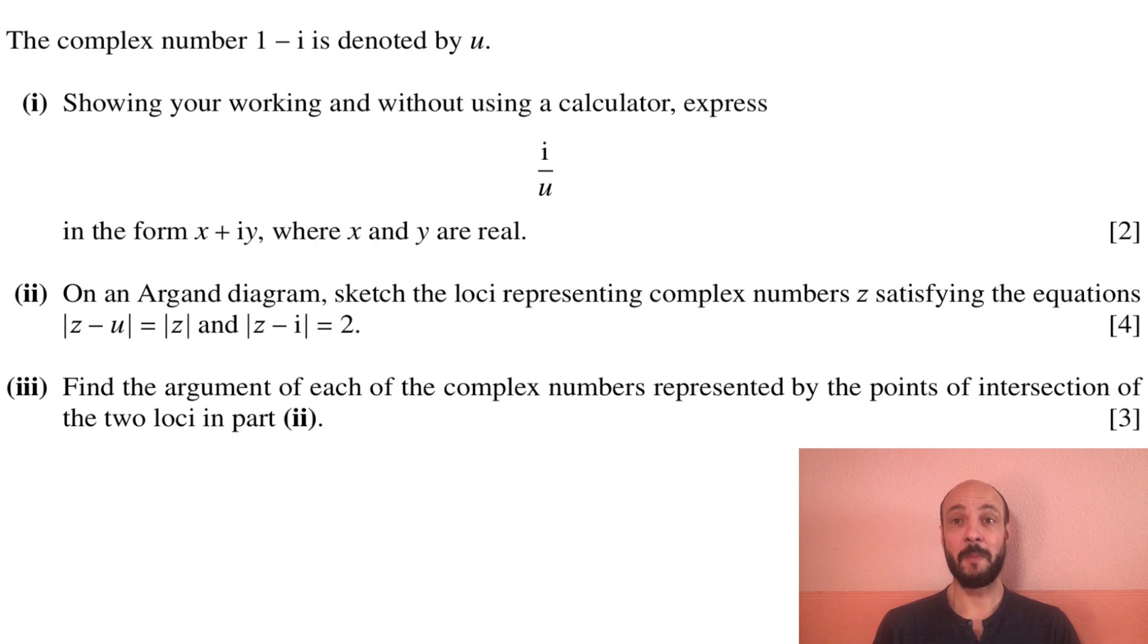So I'll start by reading the question through. The complex number 1 minus i is denoted by u. Part 1: Showing your working and without using a calculator, express i over u in the form x plus iy where x and y are real. Part 2: On an Argand diagram sketch the loci representing complex numbers z satisfying the equations |z - u| = |z| and |z - i| = 2. Part 3: Find the argument of each of the complex numbers represented by the points of intersection of the two loci in part 2.